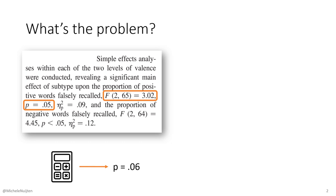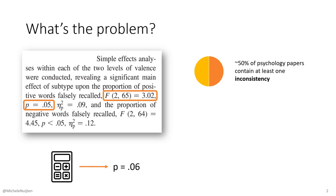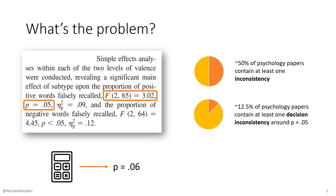In psychology, roughly 50% of published papers that report statistics contain at least one inconsistency. And in about one in eight papers — so roughly 12.5% of psychology papers — there is at least one decision inconsistency around p = 0.05, like the one we see here in this snippet of text.